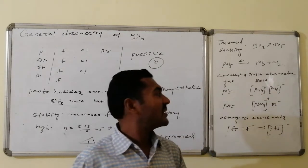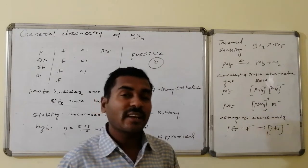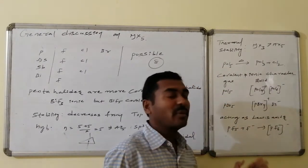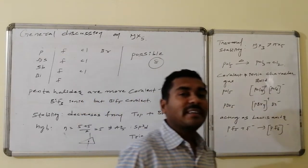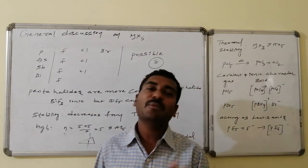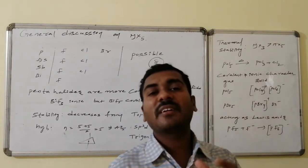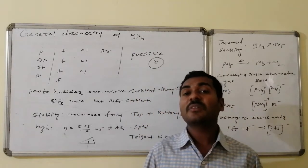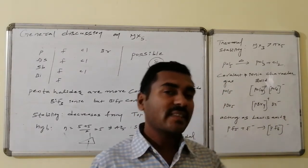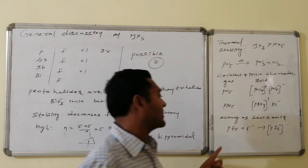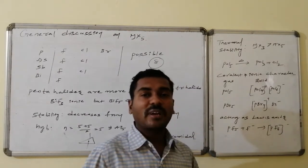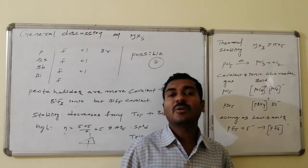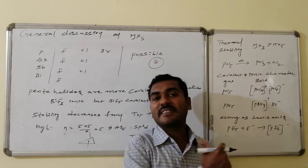Pentahalides also act as Lewis acids. Those connected to more electronegative halogens act as Lewis acids. For example, phosphorus pentafluoride reacts with F⁻ to form PF6⁻, acting as a Lewis acid. Similarly, PBr5 in solid state is present as PBr4⁺ and Br⁻. This is the general discussion over the pentahalides of the 5A group elements. Now we will go for an in-depth discussion of the important halides — phosphorus halides — which are the chlorides: PCl3 and PCl5.